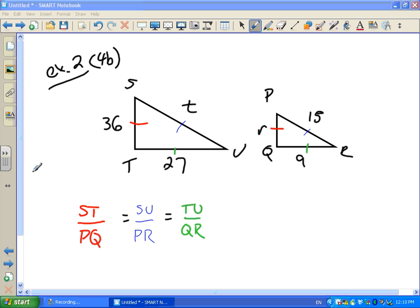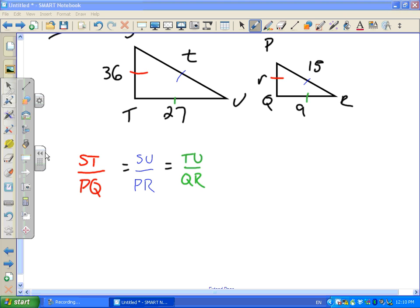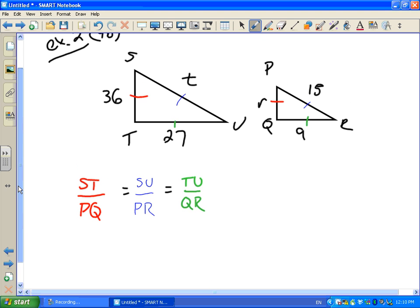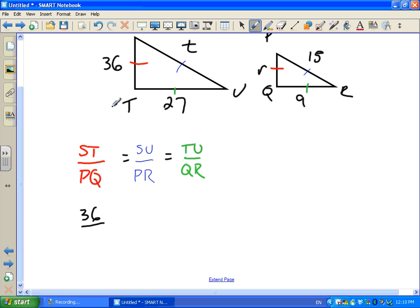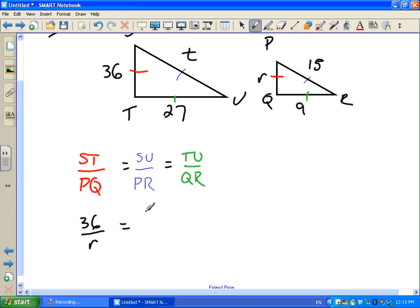When we go to setup, this is another way we can set up the questions. So, if you guys notice in example one, I showed us one way we can set up the scale factor. Another way we can set this up is by plugging in values we have for these. So, if you notice, we actually have the values of some of these. So, for instance, S, T, I have the value 36. Value of P, Q, no idea, so we're calling it small r. Value of S, U, don't know, it's just T. Value of P, R is 15. And the value of T, U is 27. And the value of Q, R is 9.